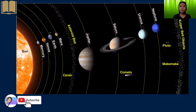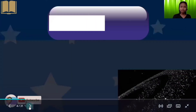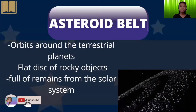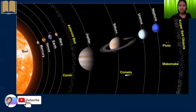From the sun to the planets, you also have the Kuiper Belt and the asteroid belt. So, let's go first with the asteroid belt. This orbits around the terrestrial planets, and it is a flat disk of rocky objects. It is full of remains from the solar system, and the largest object here is Ceres. As we can see, the asteroid belt is between Mars and Jupiter.